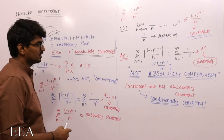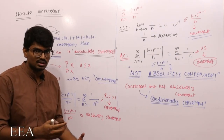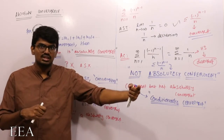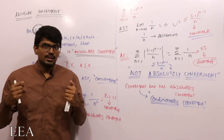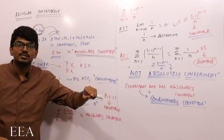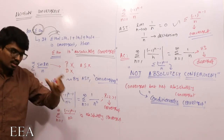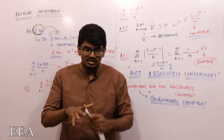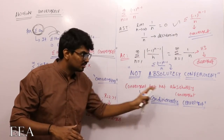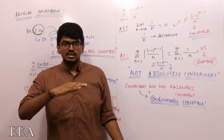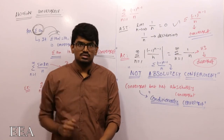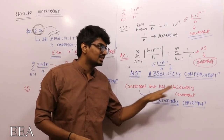Absolute convergence is strong in nature. What does that mean? If a series is convergent, I cannot conclude it is absolutely convergent. But the converse is true: if I am able to prove that the series is absolutely convergent, then the series will surely be convergent. Absolute convergence is the strongest of all. So there are three categories: divergent, conditionally convergent (convergent but not absolutely), and absolutely convergent.